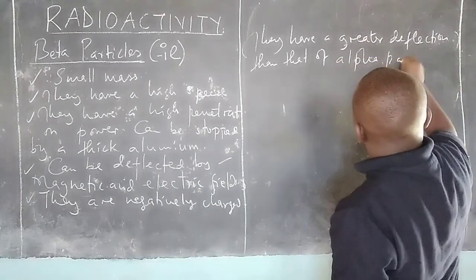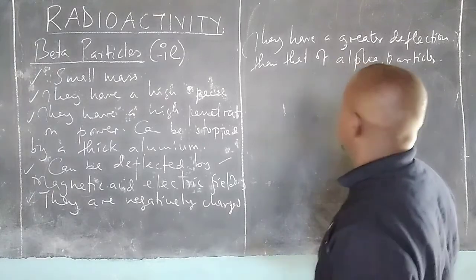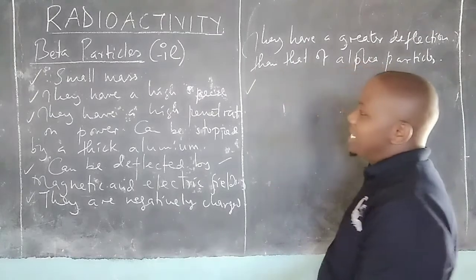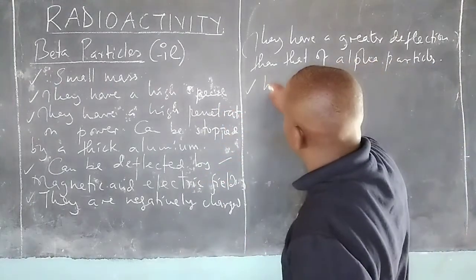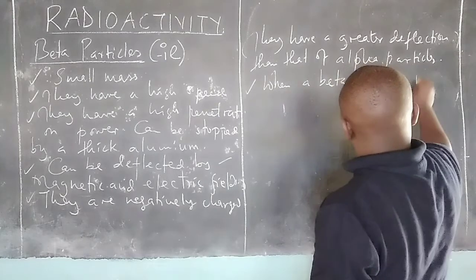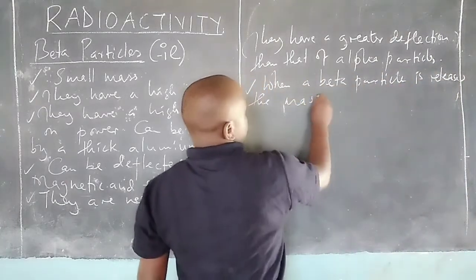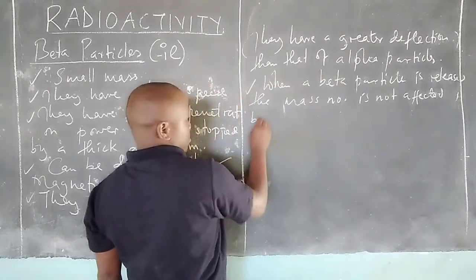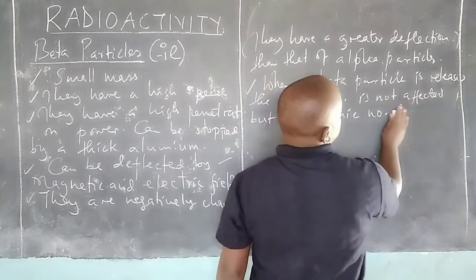Since alpha particles are heavy, they cannot be easily deflected from their path of movement whenever they are passed through some given fields. So it is very important to notice that when a nucleus loses beta particles, the mass number is not affected, but the atomic number increases by one.